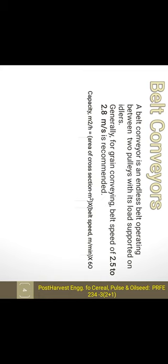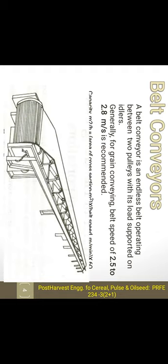First, the belt conveyor. A belt conveyor is an endless belt operating between two pulleys, and its load is supported on the idlers. For grain conveyors, the belt speed is recommended at 2.5 to 2.8 meters per second.